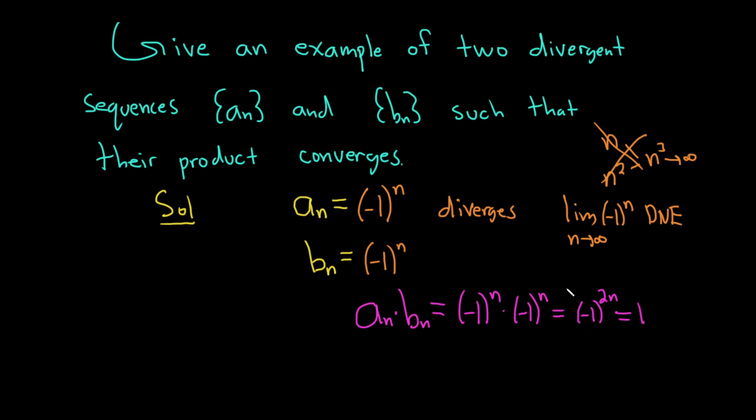So this new sequence is just 1. And if you take the limit as n approaches infinity of this new sequence, which is a sub n times b sub n, that's the same thing as the limit as n approaches infinity of 1. And you just get 1. So this is a convergent sequence.